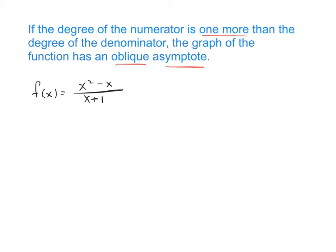To find the oblique asymptote, we will divide. So we'll have x plus one into x squared minus x, and I'm going to put a zero for my constant.